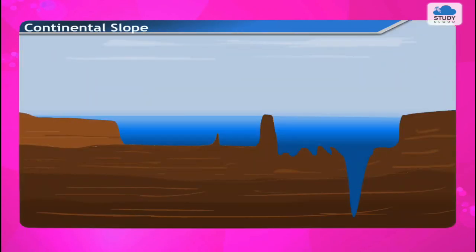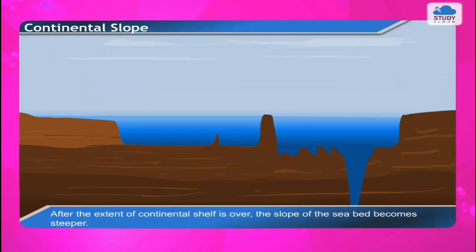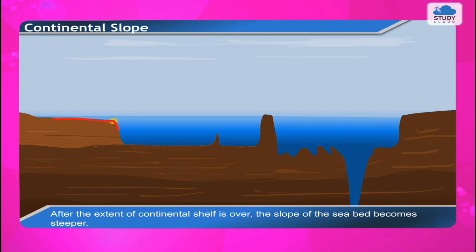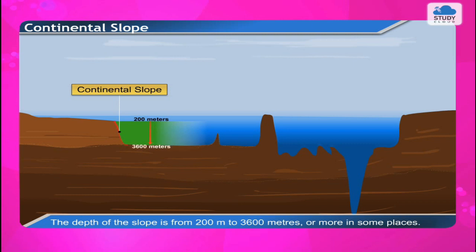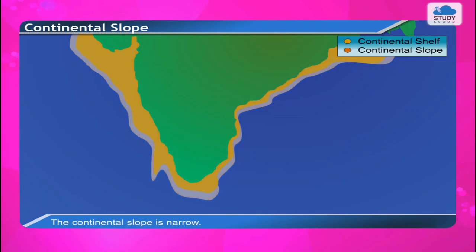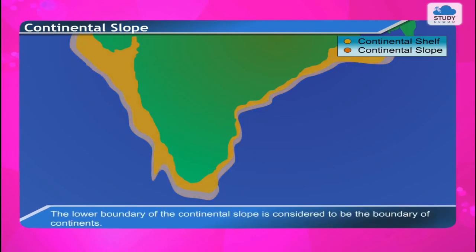After the continental shelf ends, the slope of the sea bed becomes steeper. This is called the continental slope. The depth of the slope ranges from 200 meters to 3,600 meters or more in some places. The continental slope is narrow, and its lower boundary is considered to be the boundary of continents.